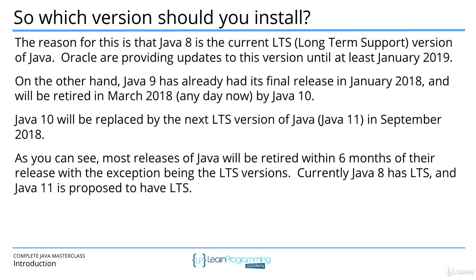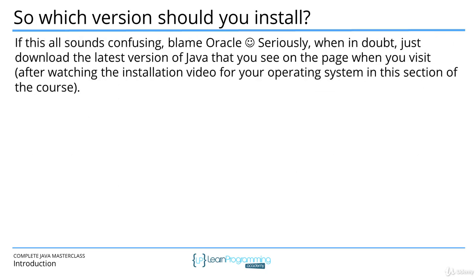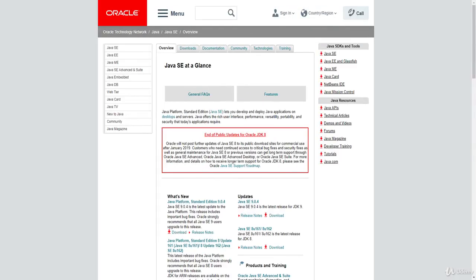As you can see, most versions of Java will be retired within six months of their release, with the exception being the LTS or long term support versions. Currently Java 8 has long term support, and Java 11 is proposed to have LTS when it comes out later in the year. If all this sounds confusing, blame Oracle. Seriously though, when in doubt just download the latest version of Java you see on the page when you visit.